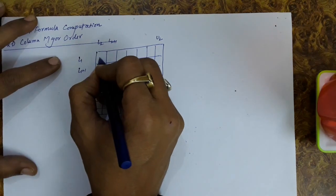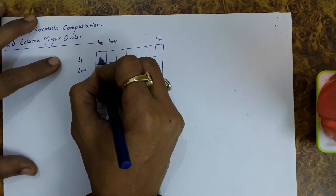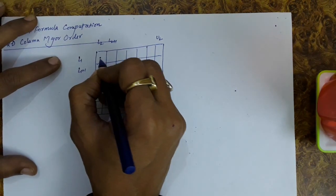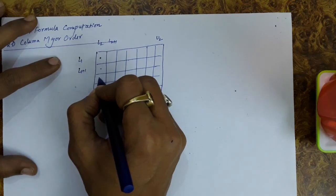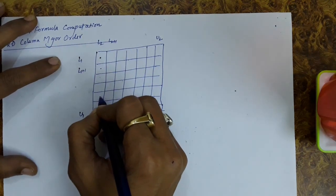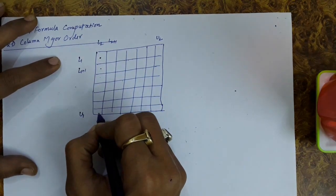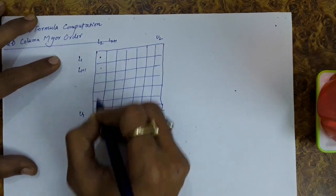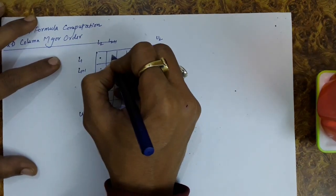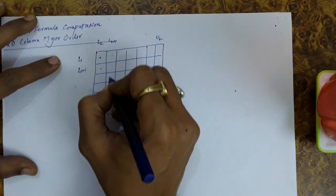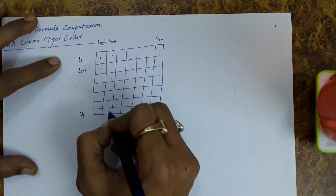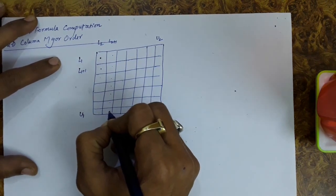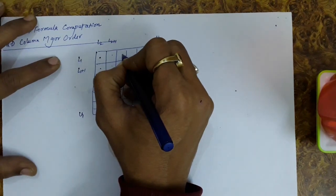The elements of the first column are stored first — this one, this one, this one, this one, this one, this one, and this one. After this, the next column's elements will be stored, and then the pattern continues column by column.